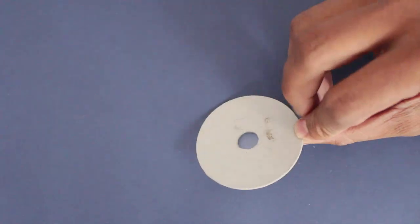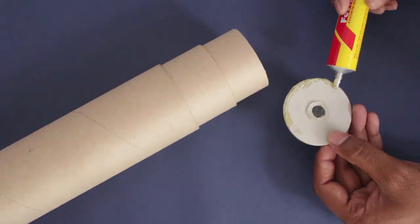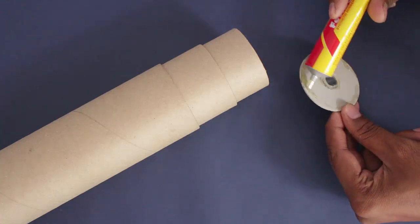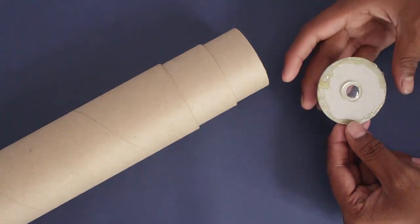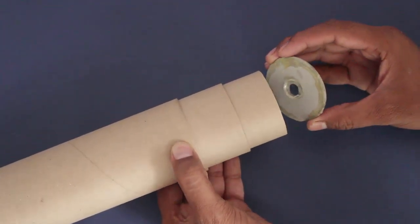And then glue this eyepiece to the small end of the tubes. This is where you are going to view from and that is why it is called as the eyepiece.